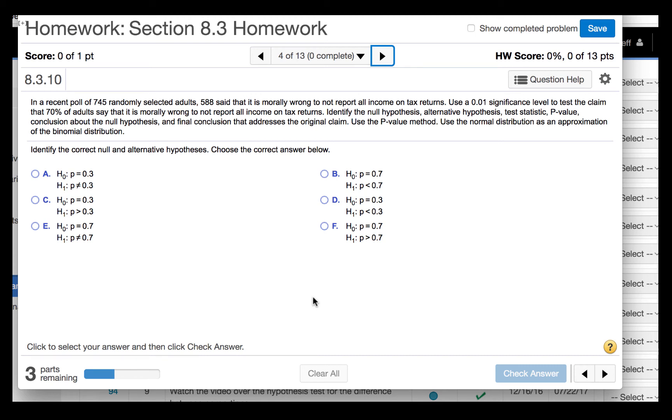In a recent poll of 745 randomly selected adults, 588 said that it is morally wrong to not report all income on tax returns. Use a 0.01 significance level to test the claim that 70% of adults say that it is morally wrong to not report all income on tax returns.